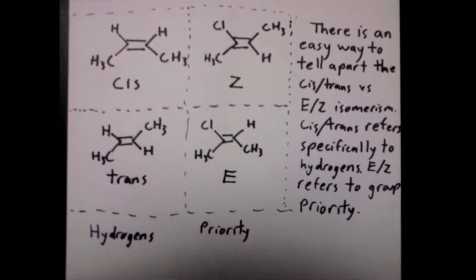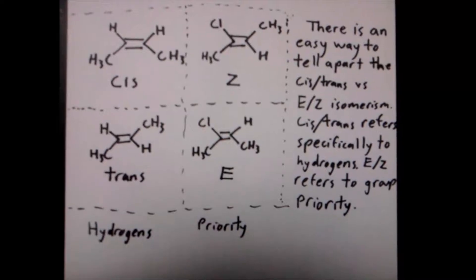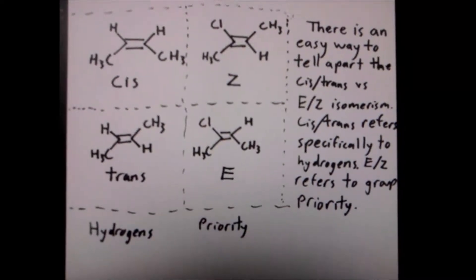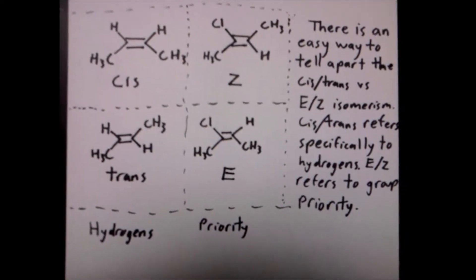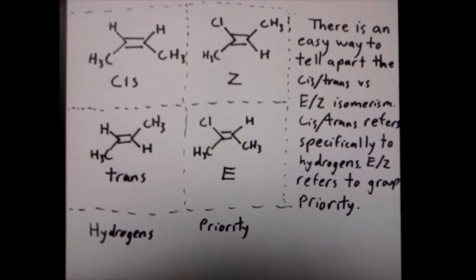So, cis/trans is only used when referring to positions of hydrogens. And E/Z is used when referring to the positions of high priority groups across a fixed bond.